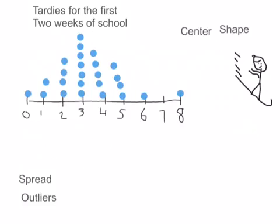So now let's talk about the spread. And the spread is kind of the high and the low. So basically we could say the spread is from 0 to 8 tardies. You could also say the range. Now the range is different, and that's when you subtract the low from the high. Now in this case it would also be 8, but sometimes it's different. So there's the spread.